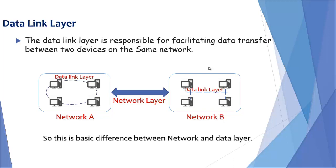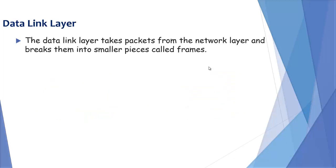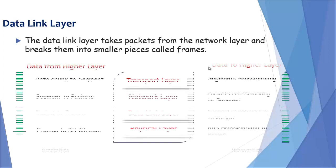This is the basic difference between network and data link layer. Data link layer takes packets from network layer and breaks them into smaller pieces called frames.